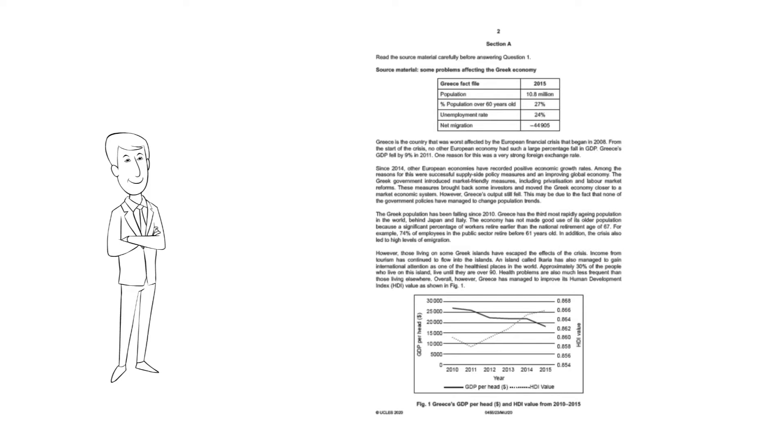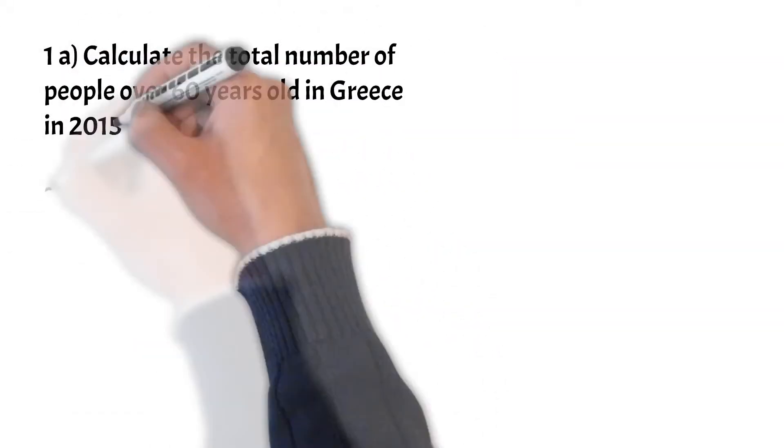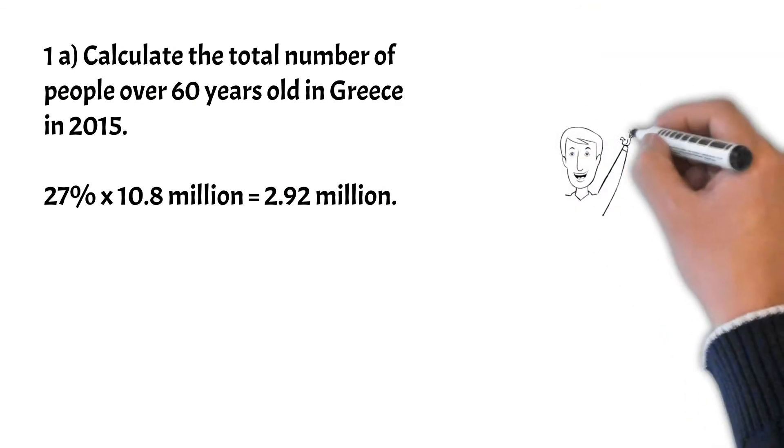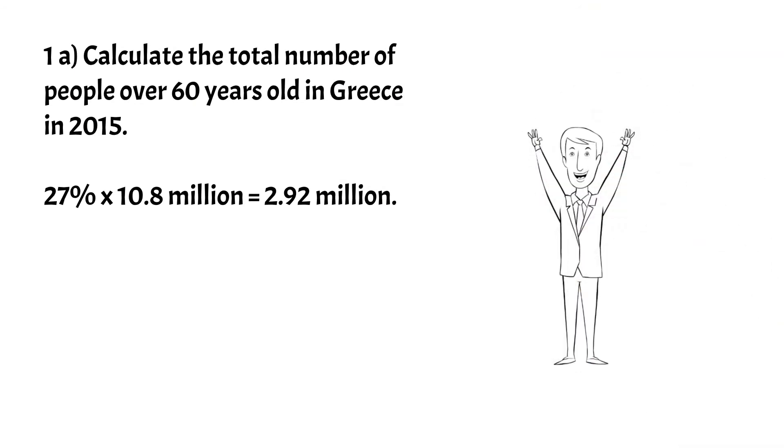Okay, let's start. Question 1a: calculate the total number of people over 60 years old in Greece in 2015. Looking at the table we can see that the population is 10.8 million and 27% of these are over 60 years old. That means it is a straight-up calculation: 27% of 10.8 million equals 2.92 million.